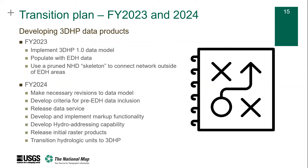Over the next couple of years, some change is coming. During FY2023, starting in October, we want to stand up the 3DHP 1.0 data model and populate it with the EDH data we have already validated in the process of acquiring. By controlling what goes in on the front side of the database, we think we'll have fewer issues with the data once it's in the database or when it goes to be used in applications.